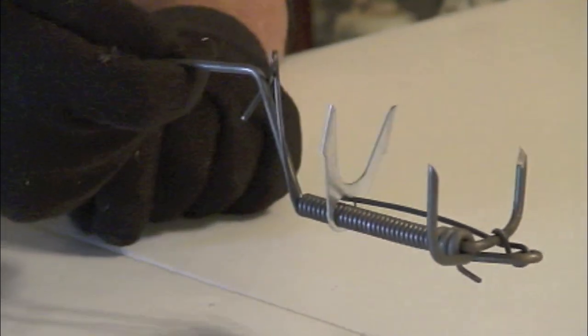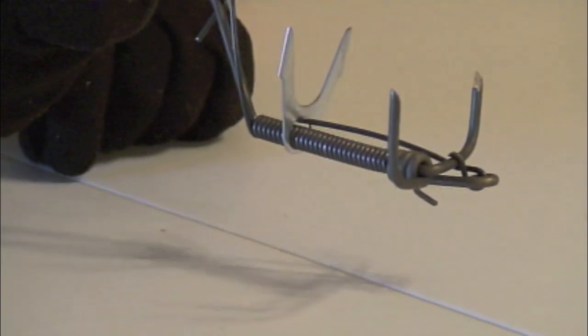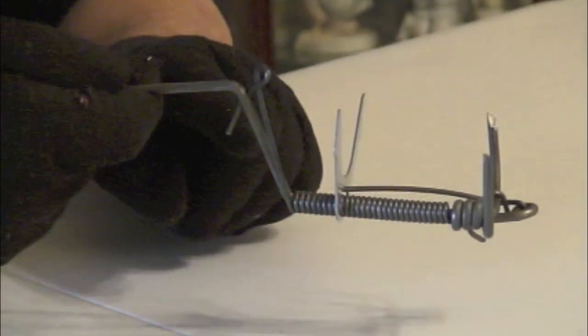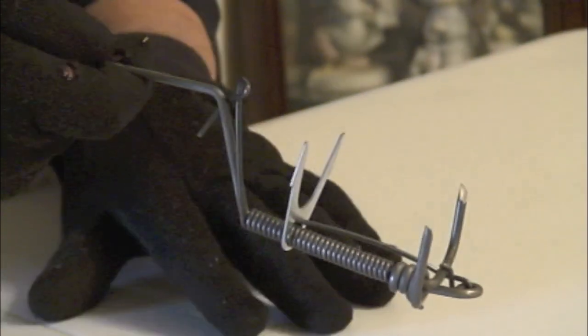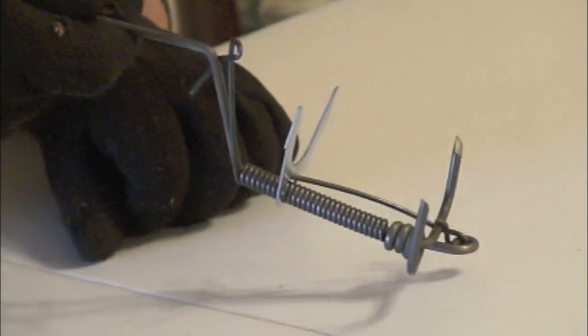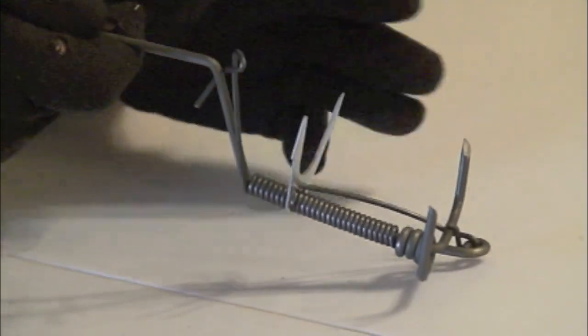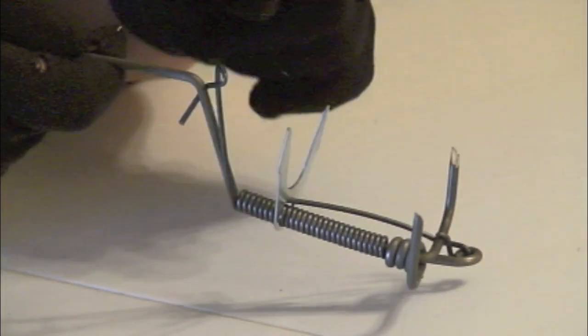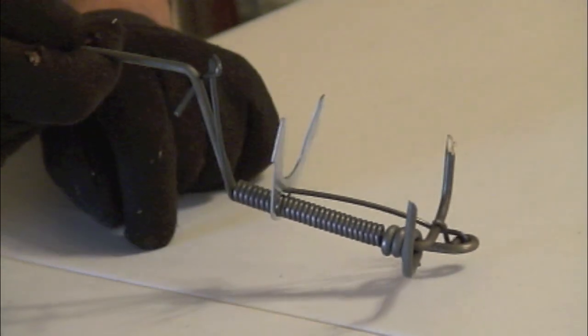You would go to where the fresh mound of the gopher is and you would set it down. You would dig the mound out to where you can see the runway. This will go right down into the runway just like this. Cover a little dirt back up on the side, but you want to leave this open.